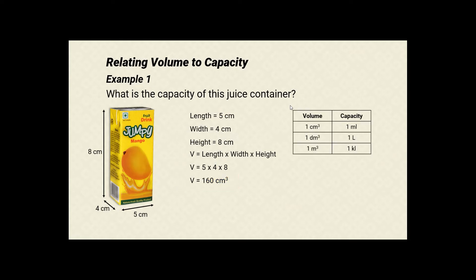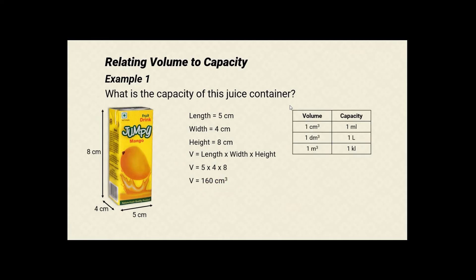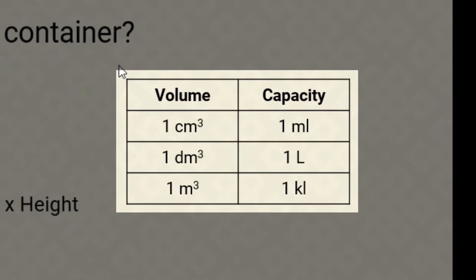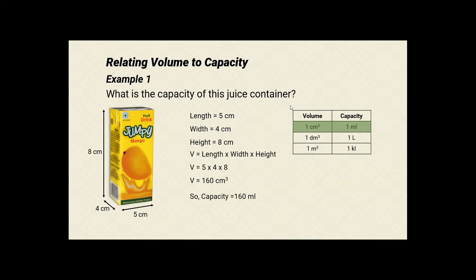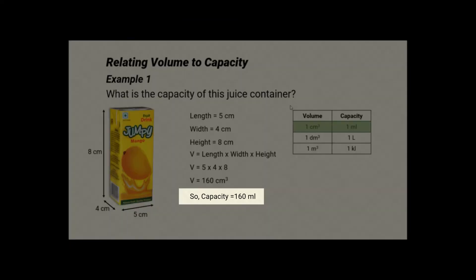To relate this to capacity we will use the table guide. Here the volume is 160 cubic centimeters, so we will look at the cubic centimeter row, which says 1 cubic centimeter is equal to 1 milliliter. Therefore the capacity of the juice container is 160 milliliters.